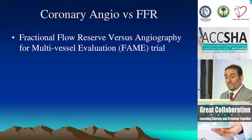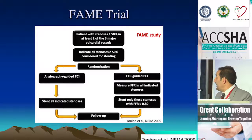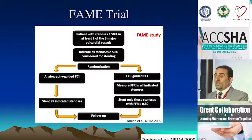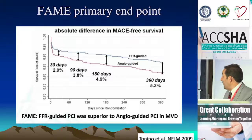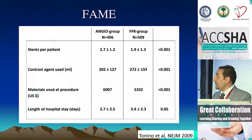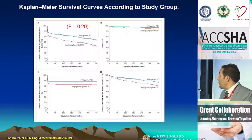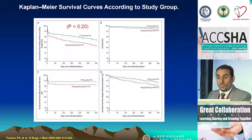In the FAME trial, they looked at just over 1,000 patients with multi-vessel disease and randomized them to angiography-guided PCI as planned, or FFR-guided PCI where angioplasty was performed only if FFR was less than 0.8. Over more than a year, patients with FFR-guided PCI did very well compared to angiography-guided PCI, using on average two stents versus three, with less contrast, and lower cost. MACE rate, survival — everything looked good and safe with the FFR-guided technique.